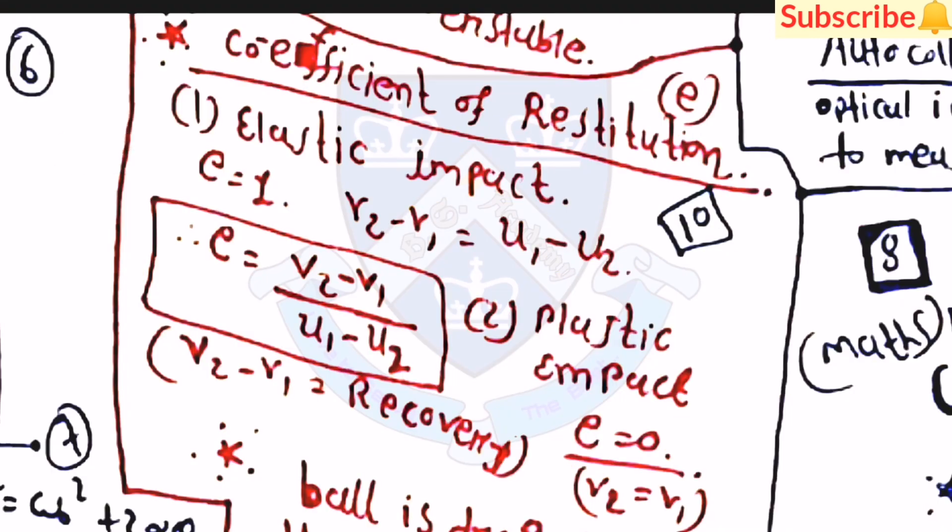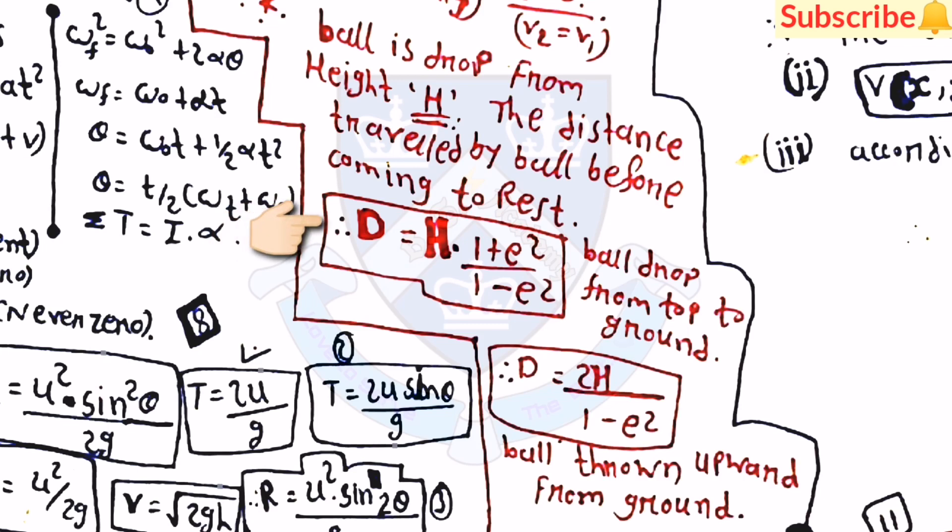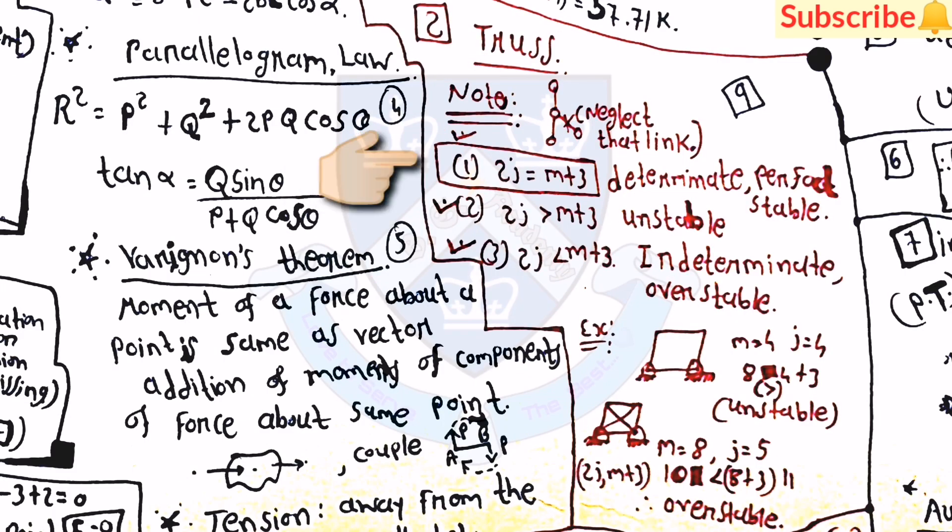Then here, coefficient of restitution. First one is the elastic impact e is equal to 1, then v2 minus v1 is equal to u1 minus u2. Then e is equal to v2 minus v1 divided by u1 minus u2. Then for plastic impact e is equal to 0, so v2 is equal to v1. Then here, if a ball dropped from the top to ground, then the equation of distance traveled by the ball before coming to rest: d is equal to h into 1 plus e squared divided by 1 minus e squared. And if ball thrown upward from the ground, then distance traveled by the ball before coming to rest is d is equal to 2h divided by 1 minus e squared.